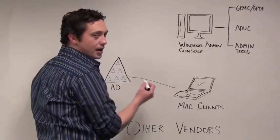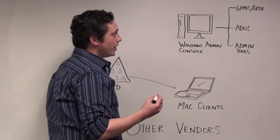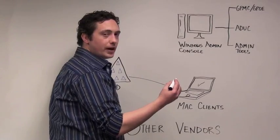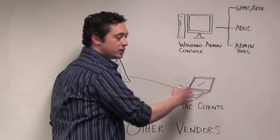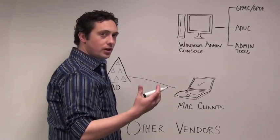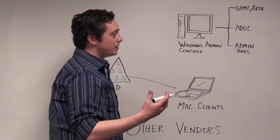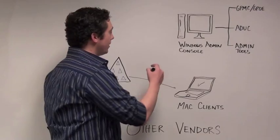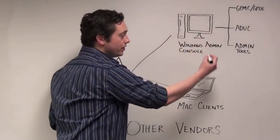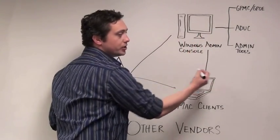So after the Mac's been joined to Active Directory, the other vendors will take and write ADM files for specific Mac client settings that they want to push out as policies. They'll choose different settings that they think you'll find useful, write ADM files, and then those settings are able to be pushed down to the client.